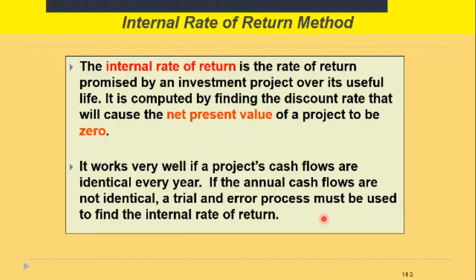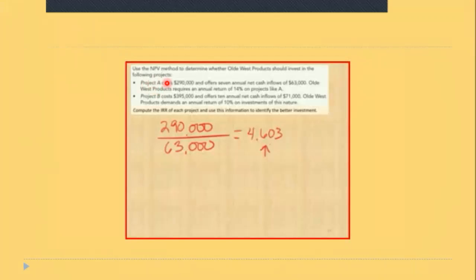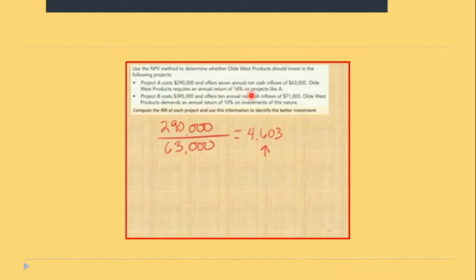Let's look at an example. We use the NPV method to determine whether AllWest Products should invest in the following projects. Project A costs $290,000 and offers seven annual net cash inflows of $63,000. AllWest Products requires an annual rate of 14% on projects like A.